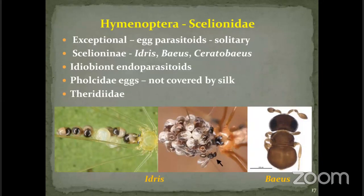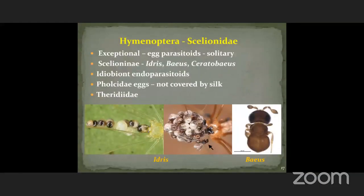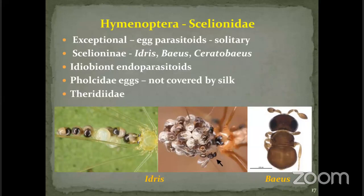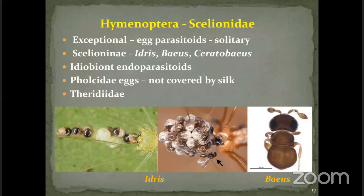The family Scelionidae are exclusively egg parasitoids and also solitary — only one parasitoid can develop within a spider's egg. Genera known to parasitize spiders include Idris and Scelionid genera. They are considered idiobiont endoparasitoids — they develop internally with no further host development. They attack spiders belonging to Pholcidae and Theridiidae. Pholcidae eggs are not covered with silk, making them more vulnerable to attack by Scelionidae parasitoids. In some genera, the parasitoids also lack wings, and their legs are modified to crawl on spider webs without getting entangled.